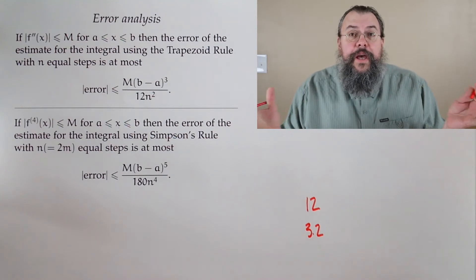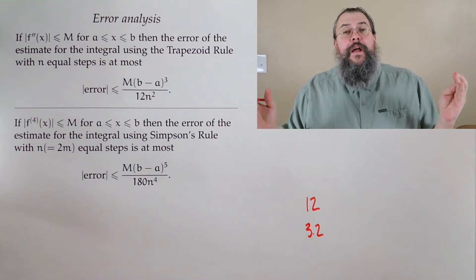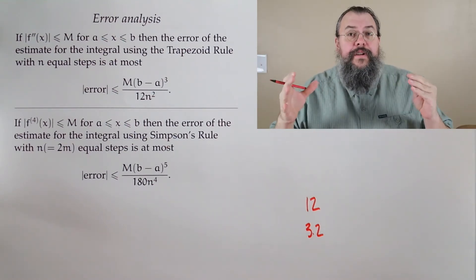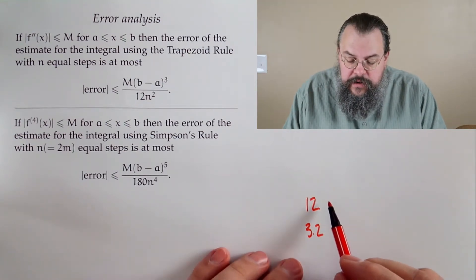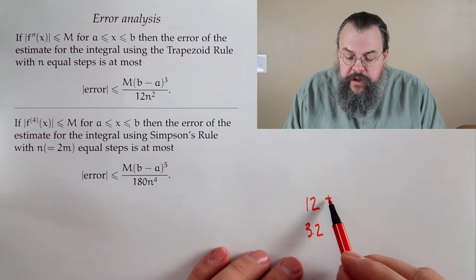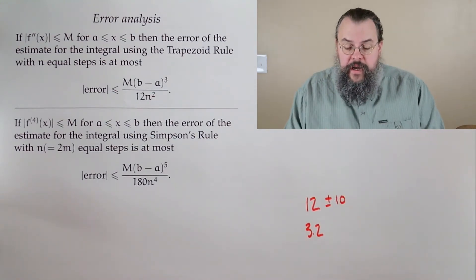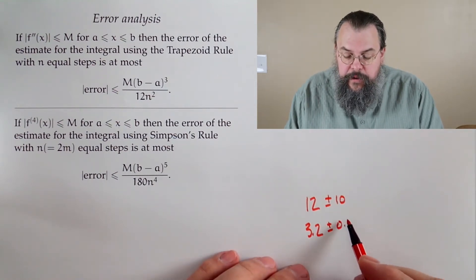Now, these are both estimates. Are they wrong? Well, no, estimates are estimates. What happens is, now we have to say, well, to get an idea of the quality of the estimate says an error. So when we say 12, we say with an error of what? Well, it's 12 plus or minus 10. That's a measurement of the error. And on the other hand, we could say 3.2 plus or minus 0.1.